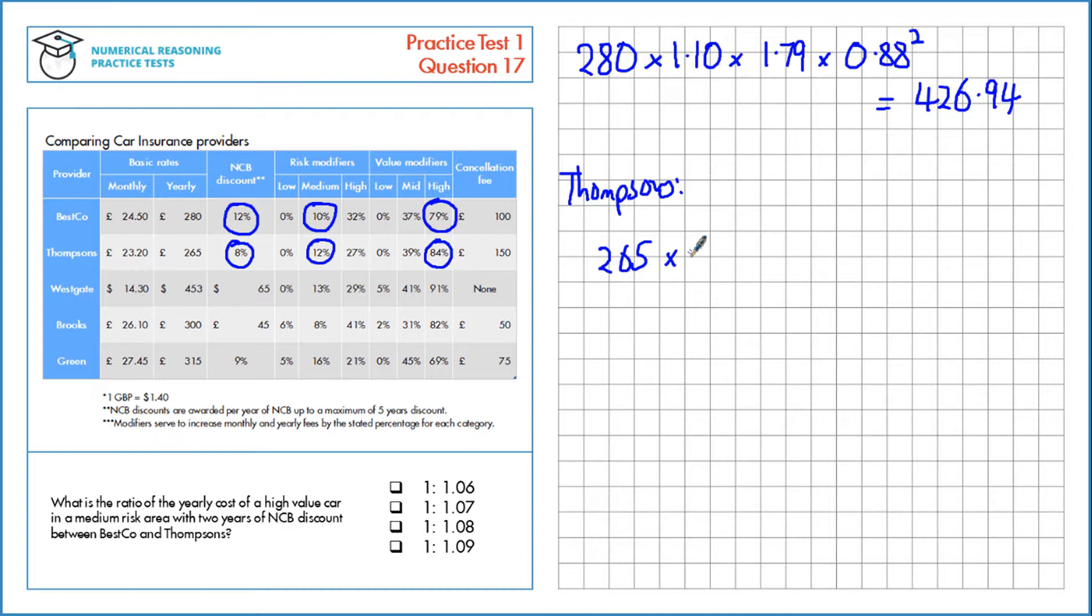The risk modifier is 1.12, a 12% increase. 1.84 for the value, an 84% increase. And 0.92 for the no claims bonus.